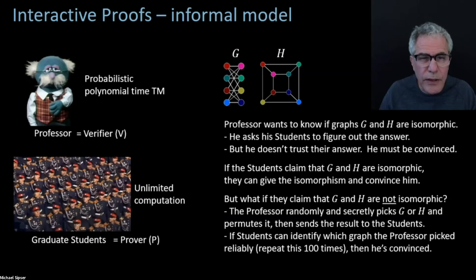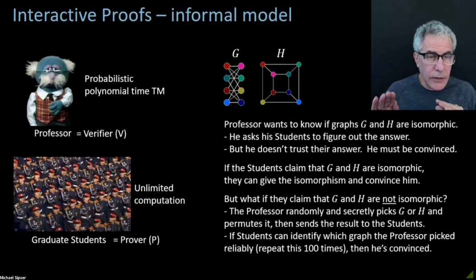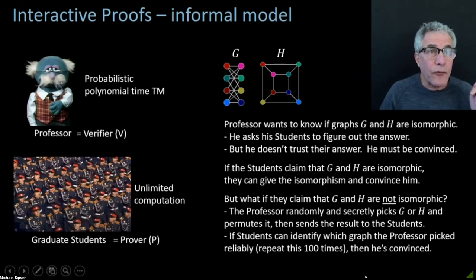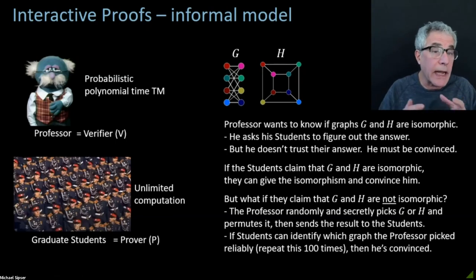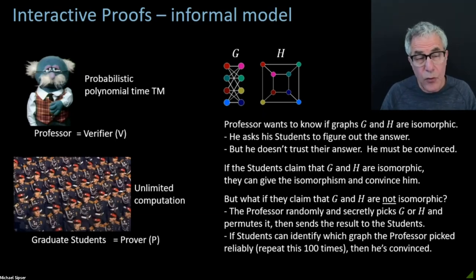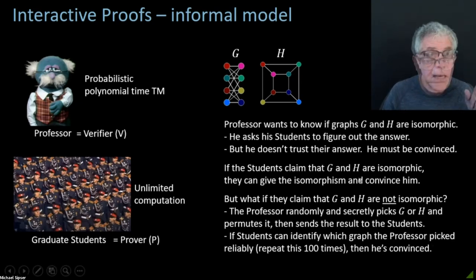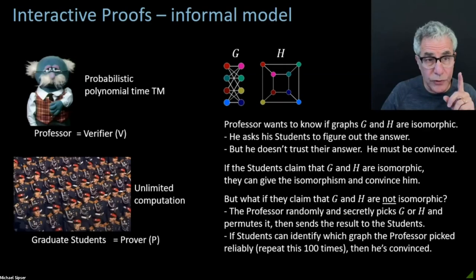The question of revealing the isomorphism — there is no isomorphism in the non-iso case. For this little illustration, the professor doesn't know — the graphs could be isomorphic or they could be not isomorphic. The professor wants to be convinced either way, whatever answer the students come up with. We're going to shift this into a problem about deciding a language next. I want to move from this informal model and now formalize that in terms of a model which will be deciding a language.